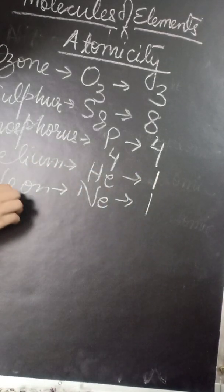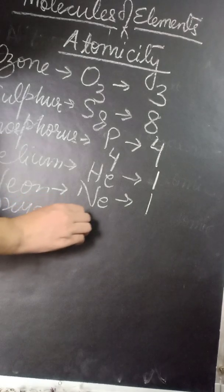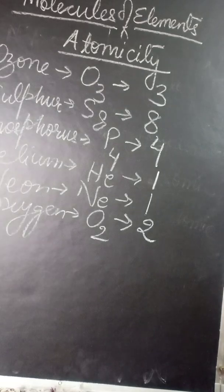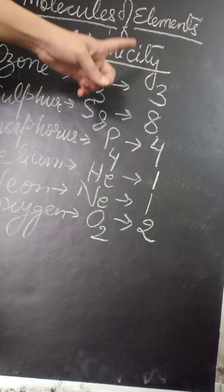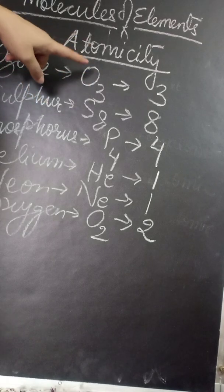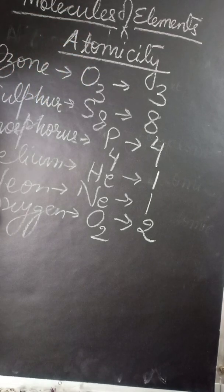We can take oxygen. Oxygen is written as O2. Atomicity refers to the number of atoms in one molecule of that element.